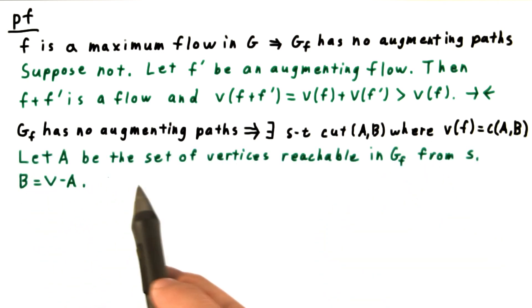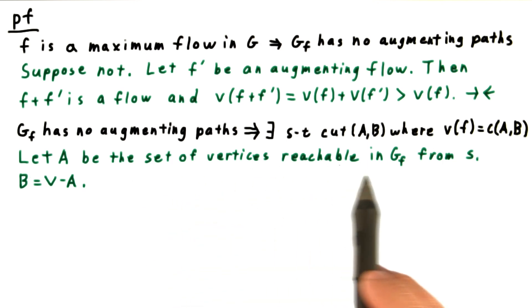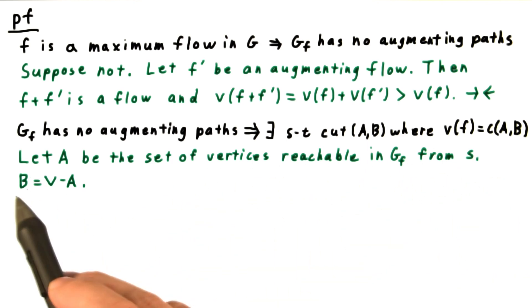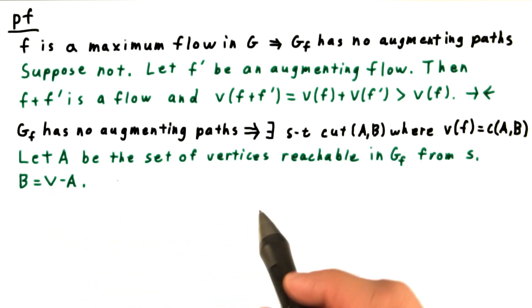We let A be the set of vertices we can reach from S in the residual graph GF. We let B be the complement of A.